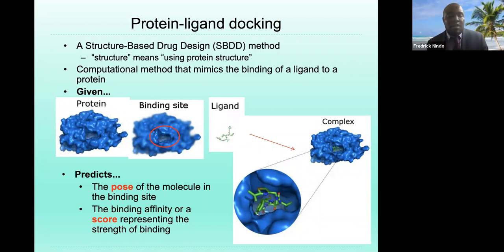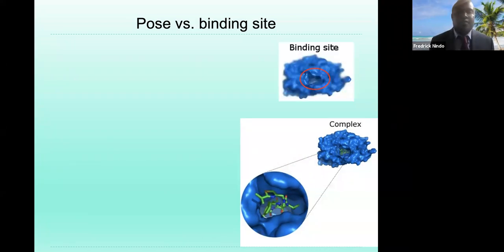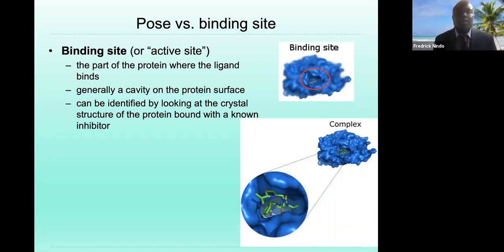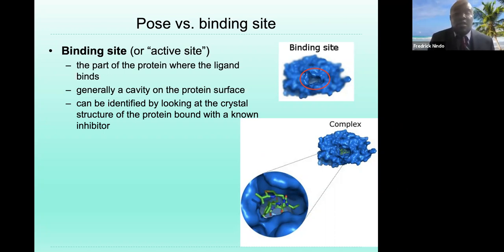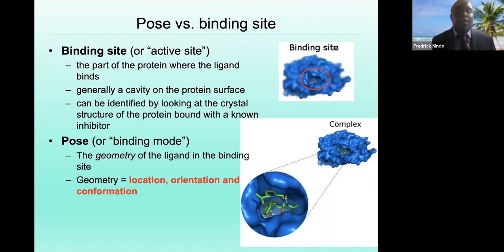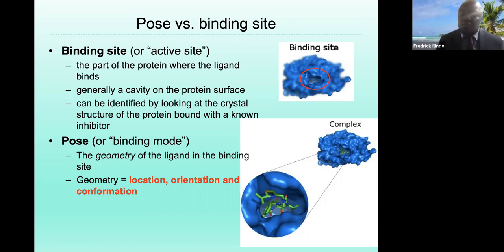The pose of the molecule in the binding site is predicted, and then the binding affinity is scored, representing the strength of binding. The binding site is the active site in the receptor — the part of the protein where the ligand binds, generally a cavity on the protein surface. The pose is the binding mode — the geometry of the ligand in the binding site, describing location, orientation, and conformation.